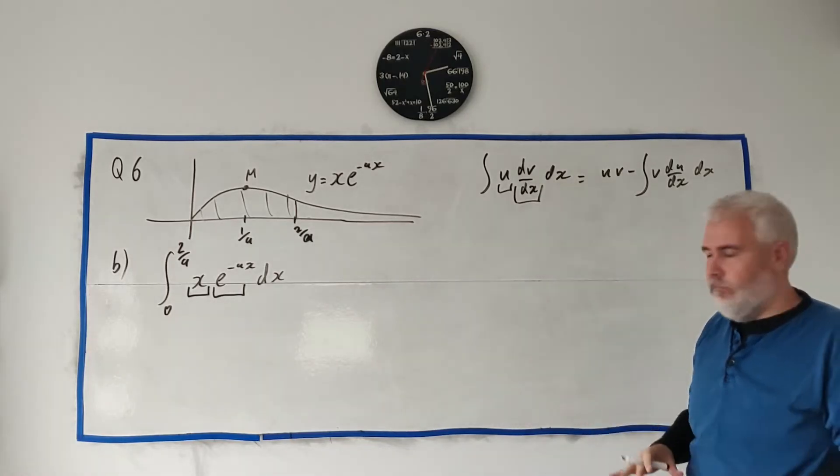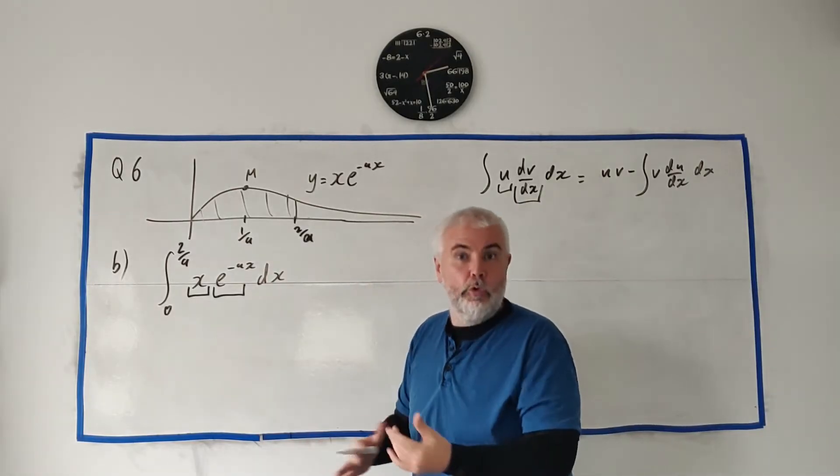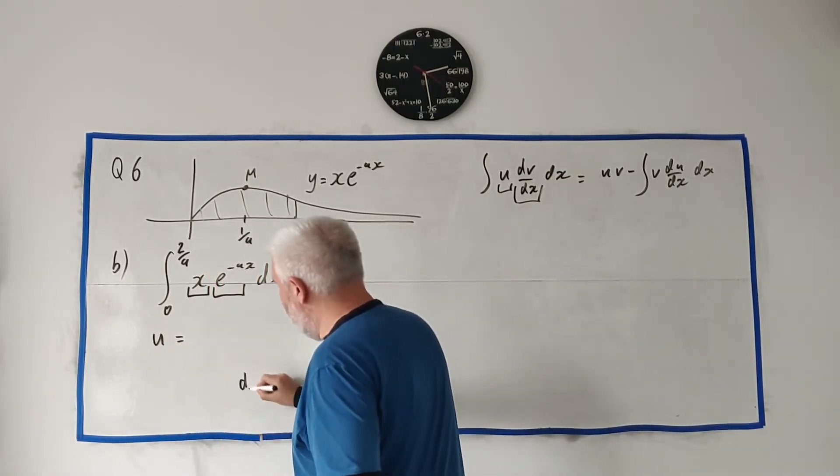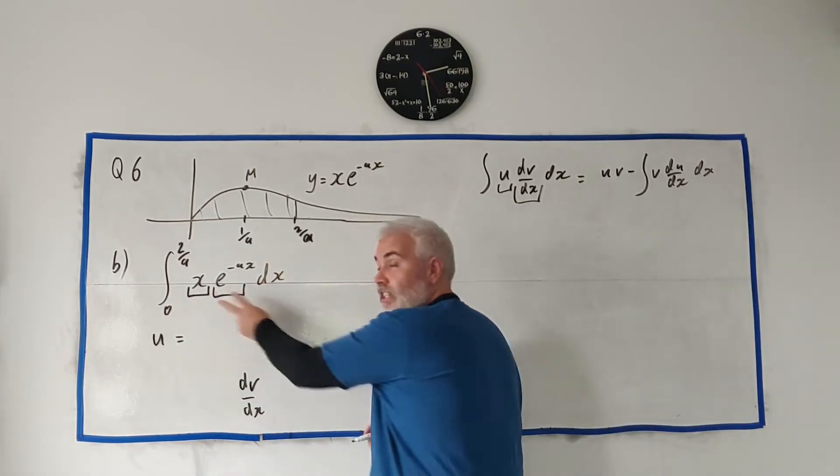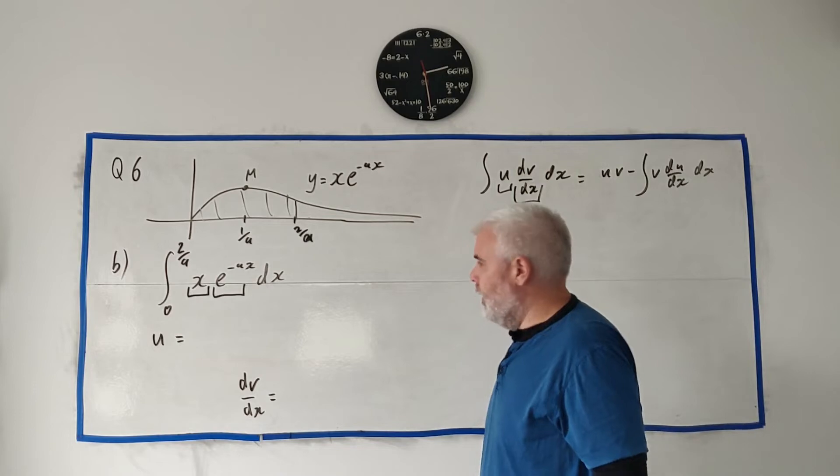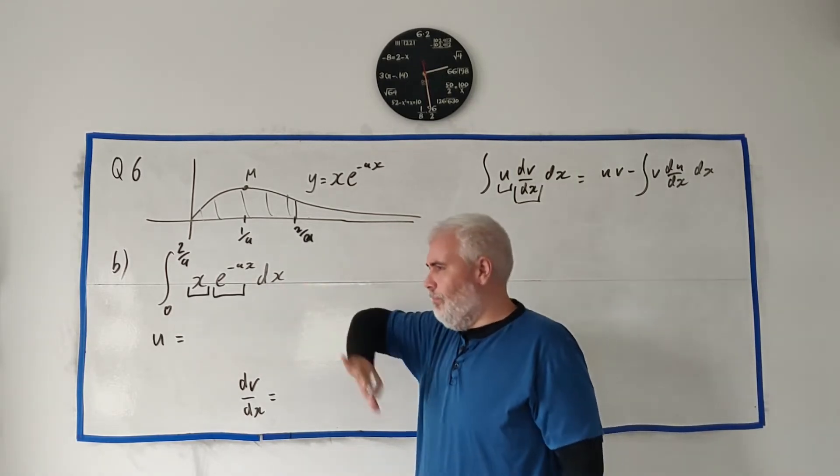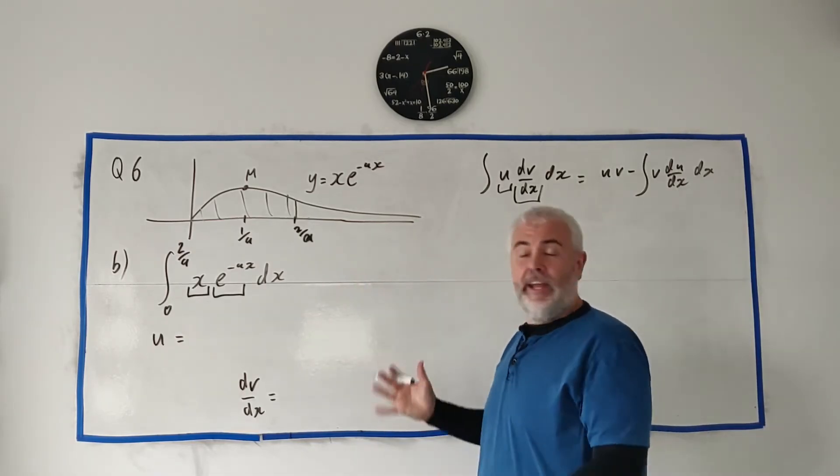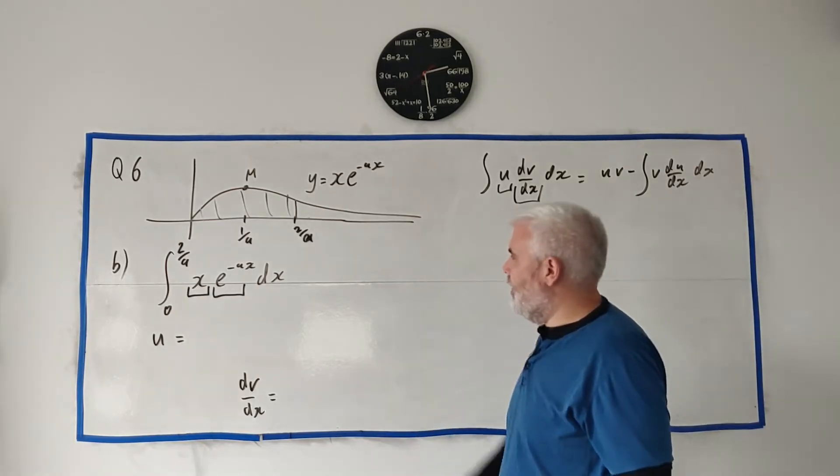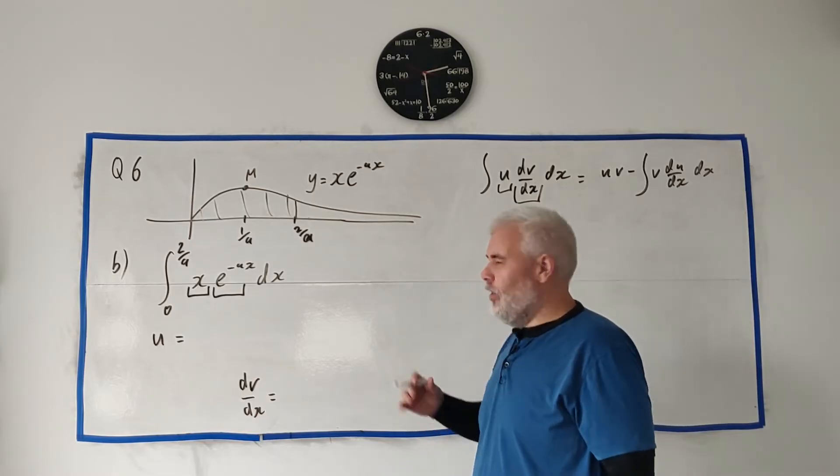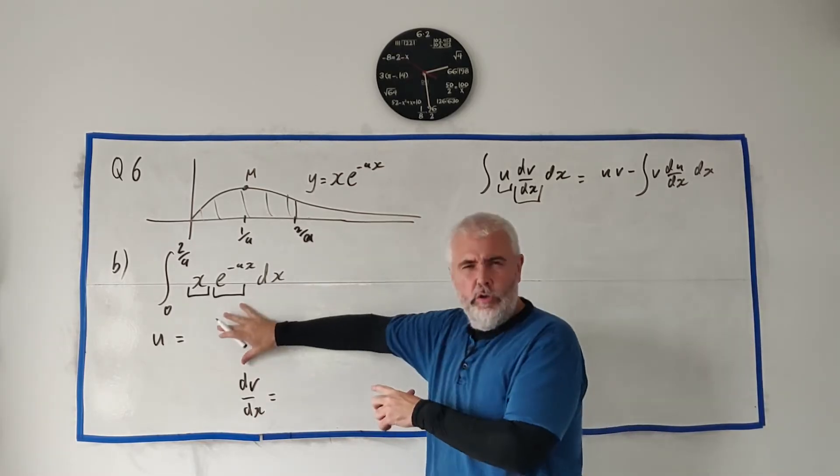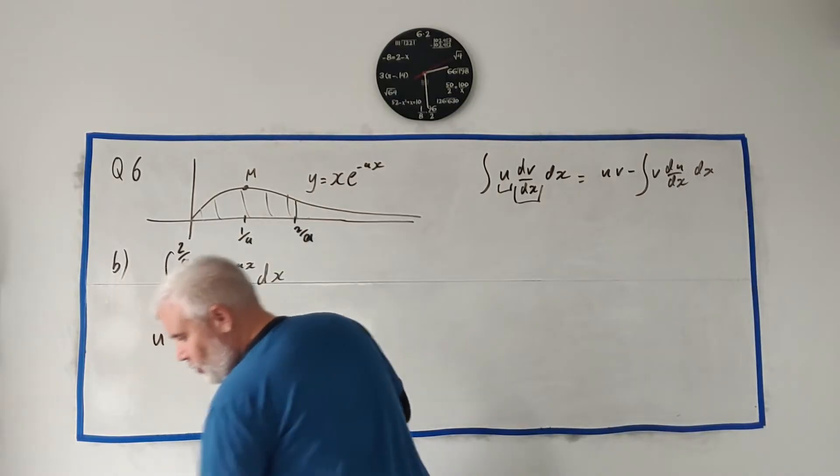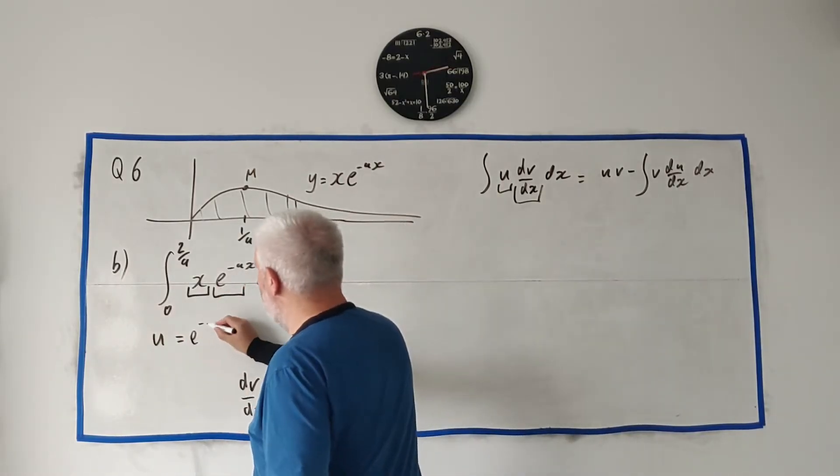The main first thing we have to decide is what is what. We need to know what's u and what's dv/dx. Our choices are these two here. You get two choices. Often you can just pick whichever one you want and you'll fail within two or three minutes, then go back and choose the other ones. This one's a little more awkward because it takes a little longer to fail. I'm going to show you the wrong way first.